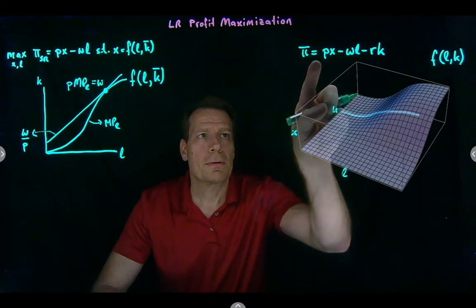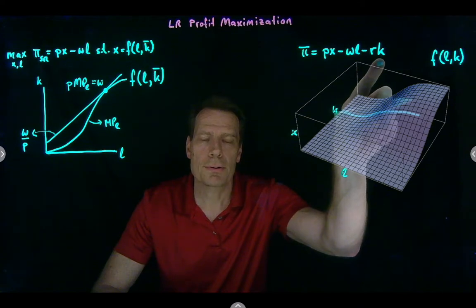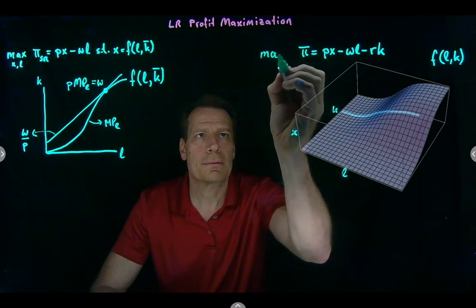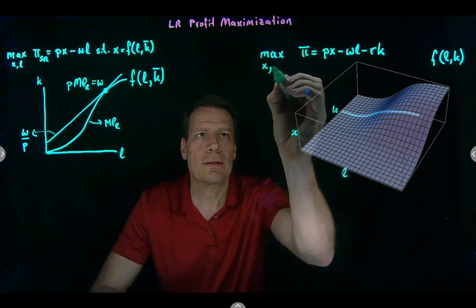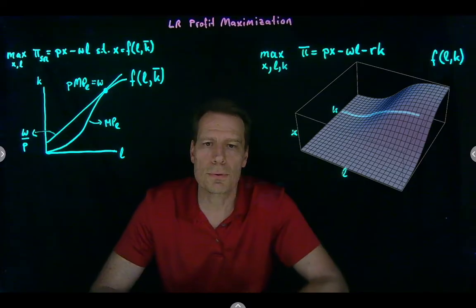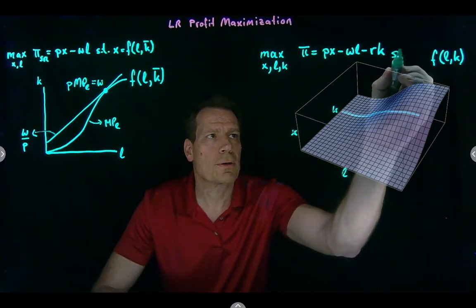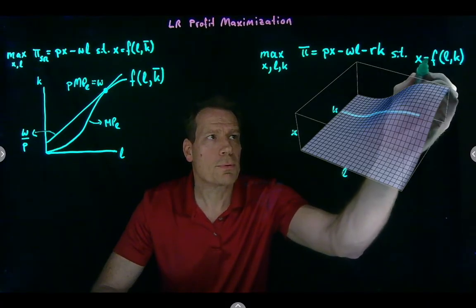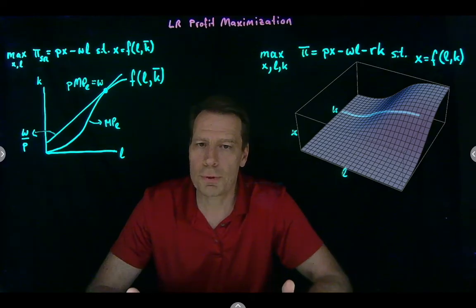Profit is going to equal revenue, minus labor costs, minus the cost of capital — where the price of capital is denoted by R, called the rental rate of capital, and capital by little k. The firm will maximize that, choosing how much to produce and what combination of labor and capital to use, subject to the constraint that output must be producible with the chosen combination.